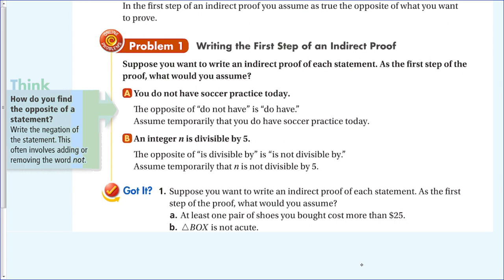Make sure the negation makes sense where you place it. For example, you wouldn't say 'n is divisible not by 5' — that doesn't make sense. Negate the right thing. Now try these: suppose you want to write an indirect proof — as the first step, what would you assume? Letter A: 'At least one pair of shoes you bought cost more than $25.' Letter B: 'Triangle box is not acute.' Pause and answer these two.